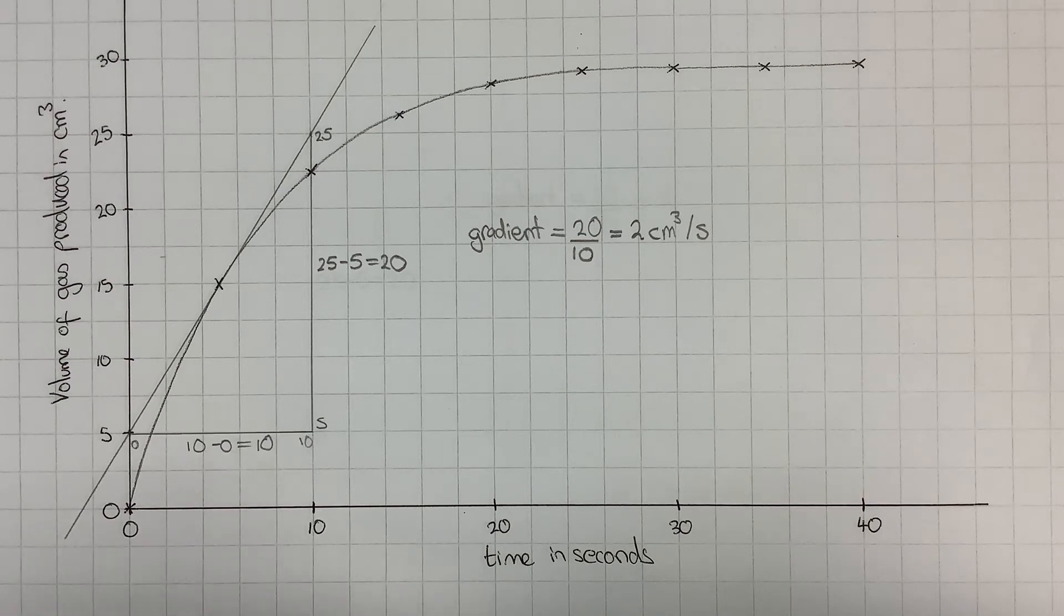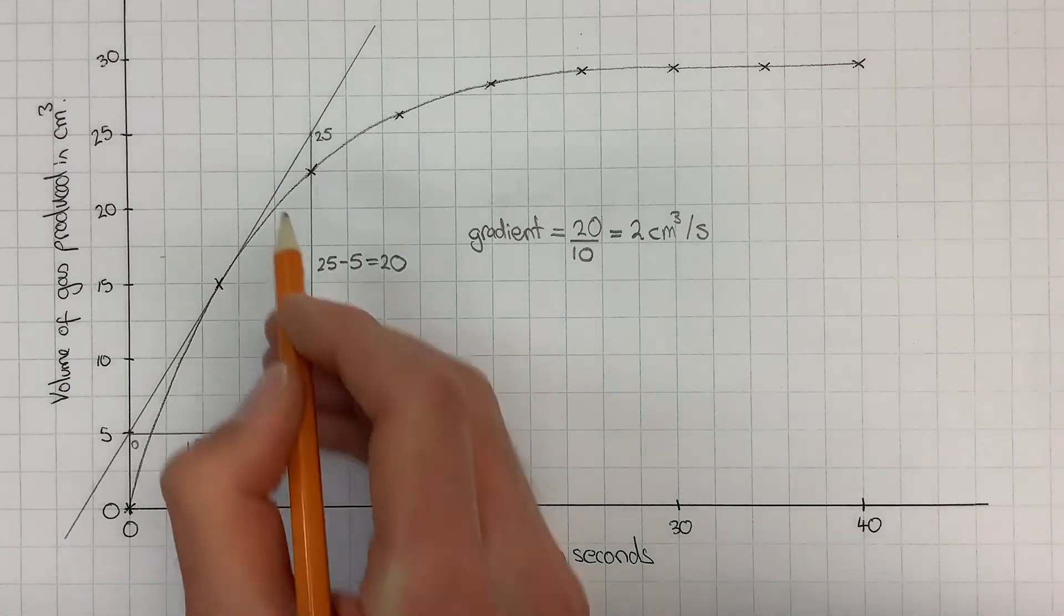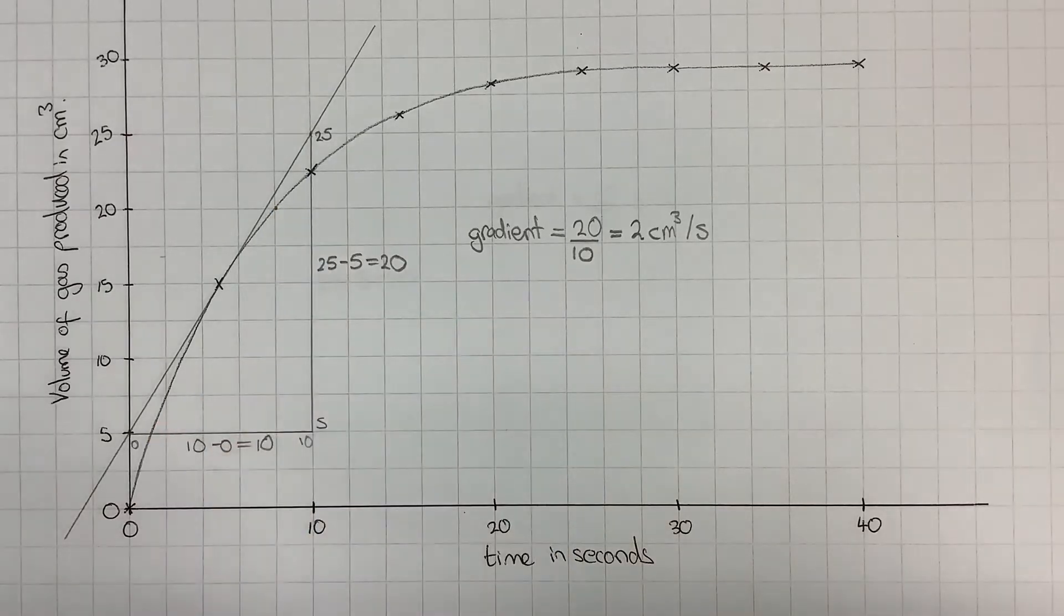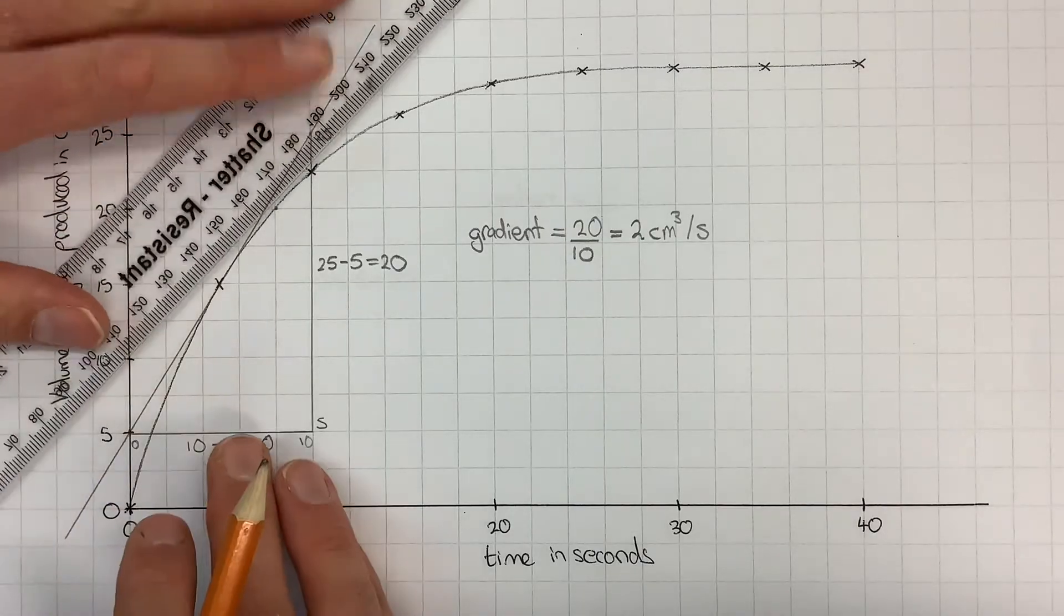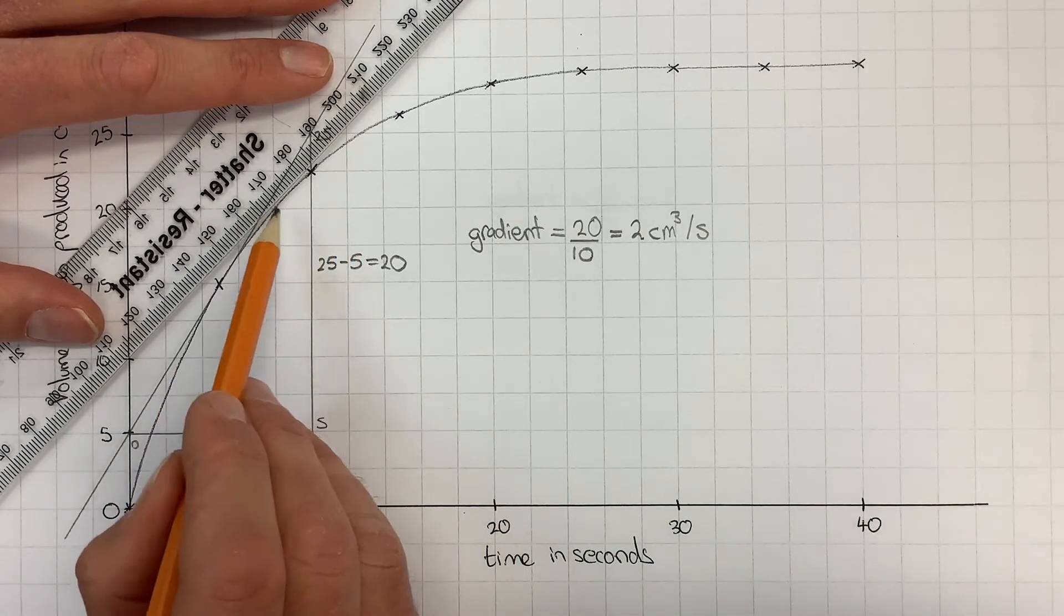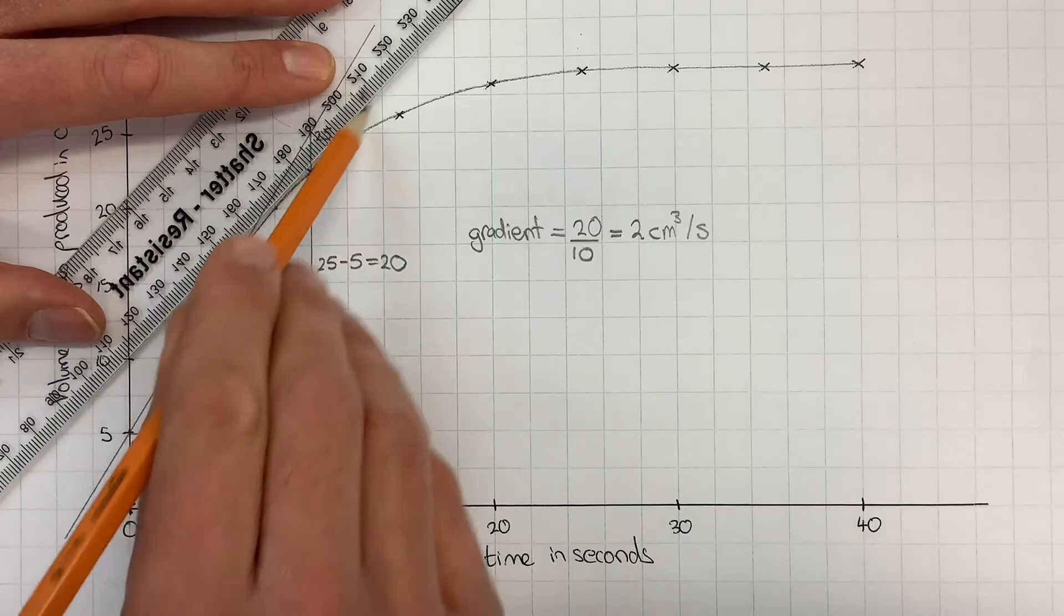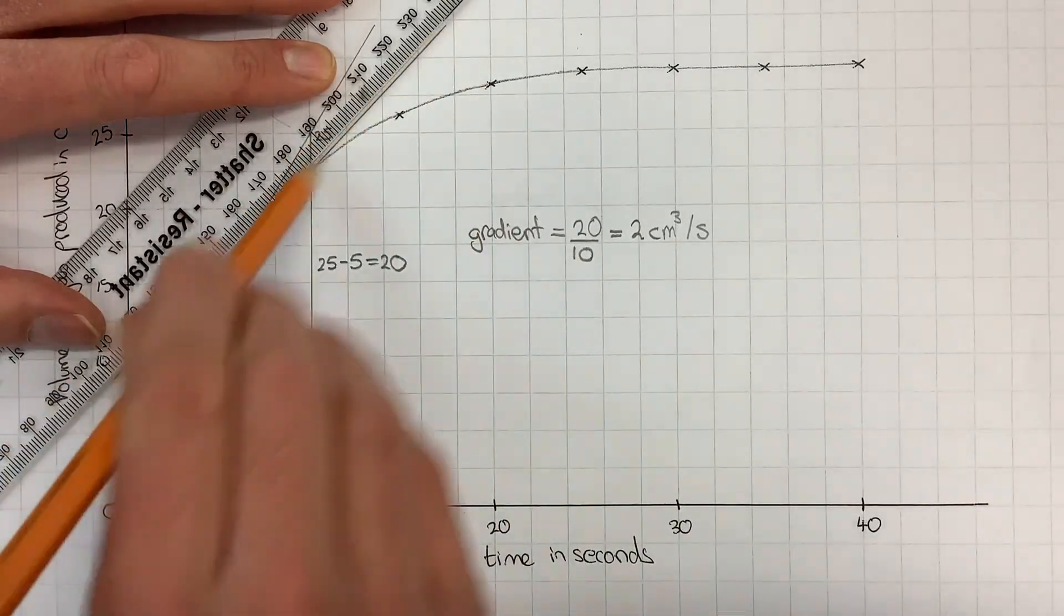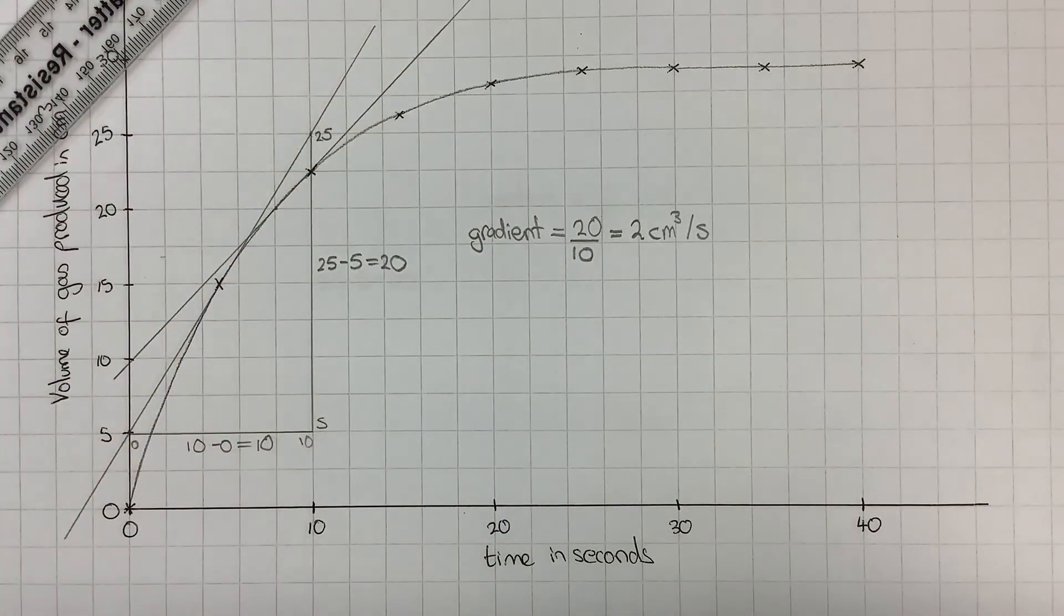If I wanted to know, for example, the instantaneous rate at eight seconds, which would be this point, I'd have to draw in another tangent. That might look something like this, touching the line just at that point there, and I could draw in another tangent and do the same process.